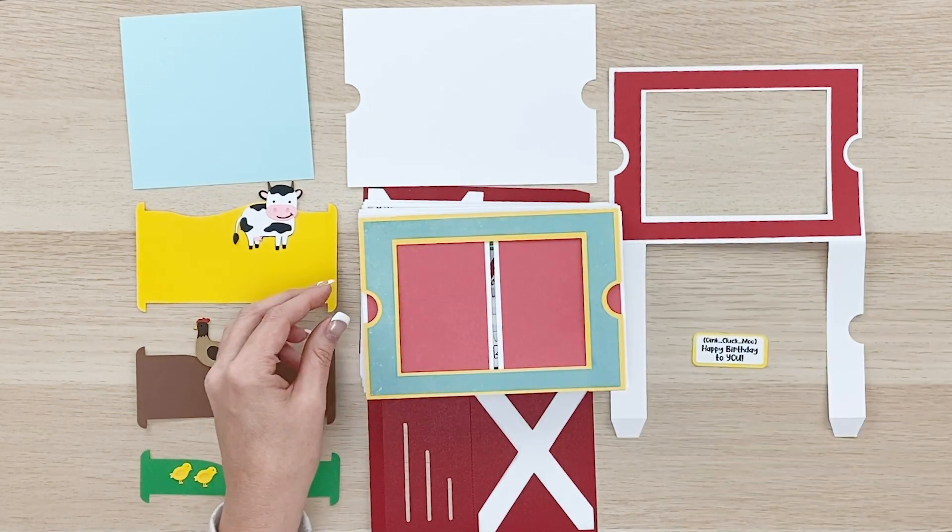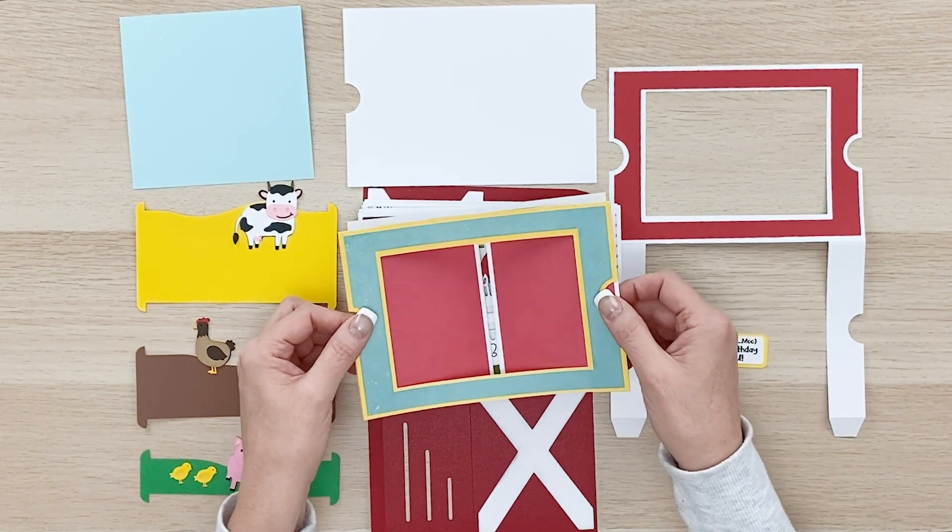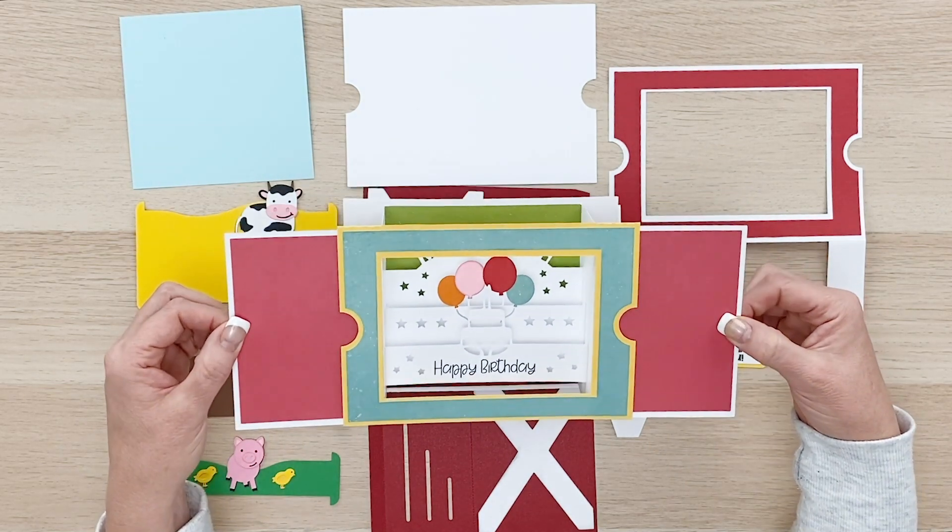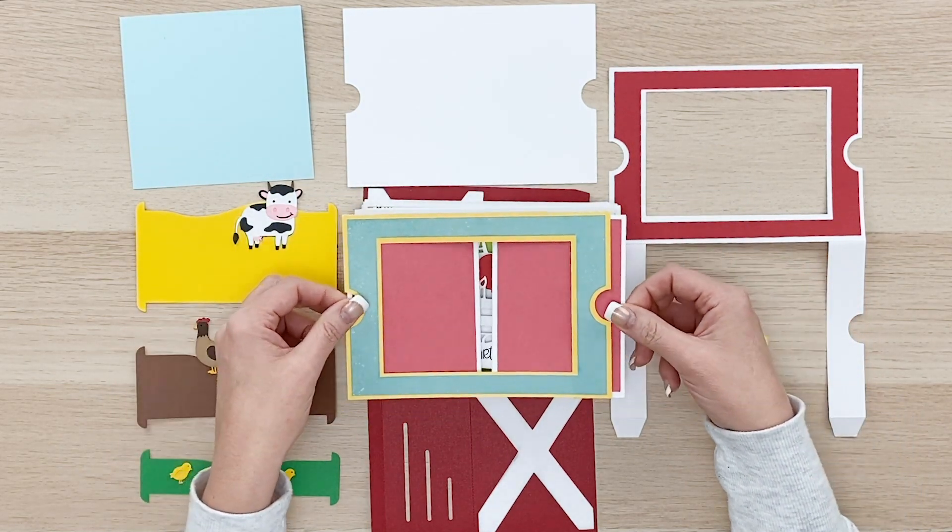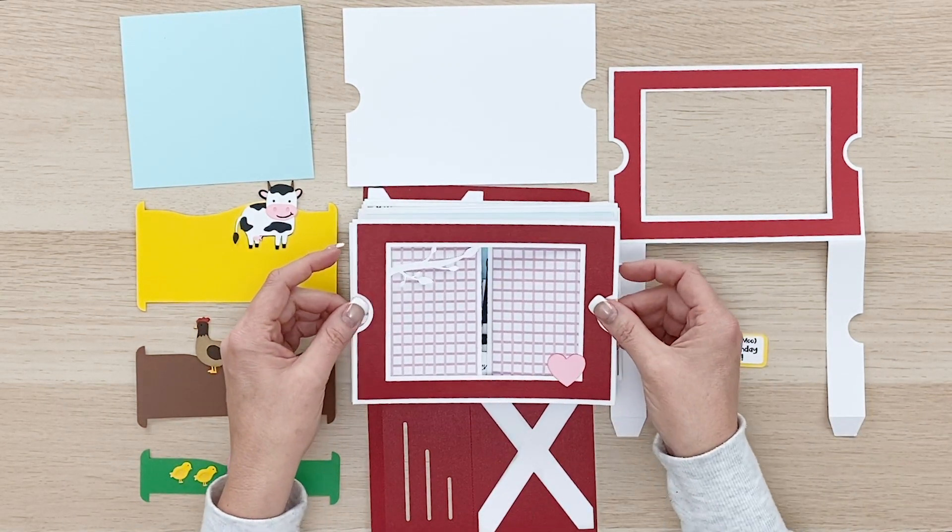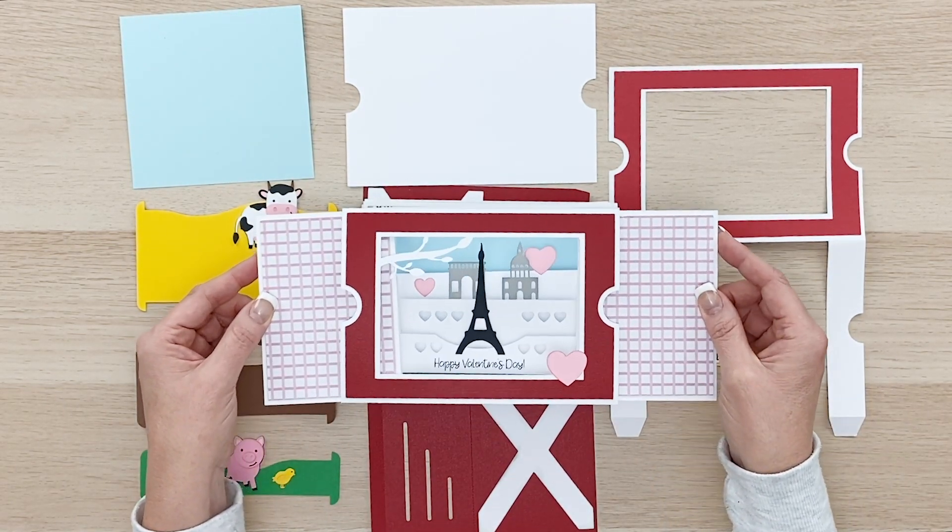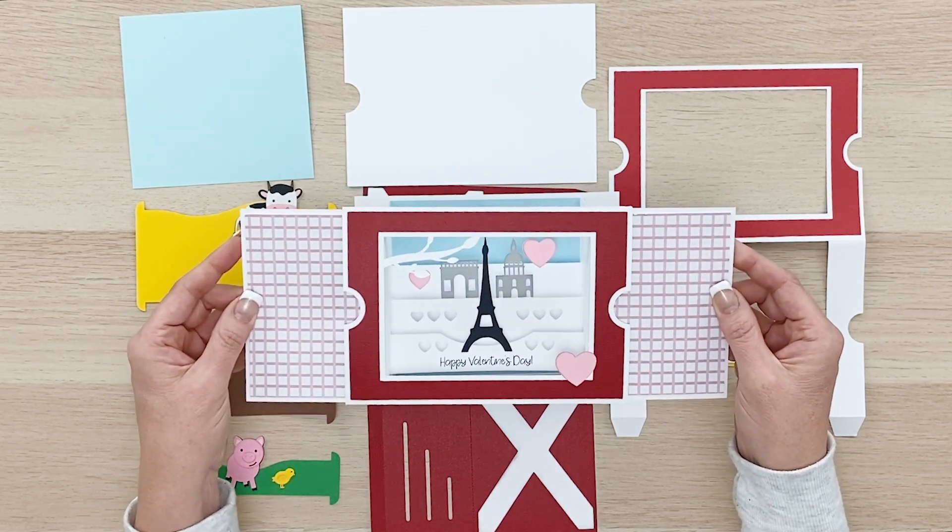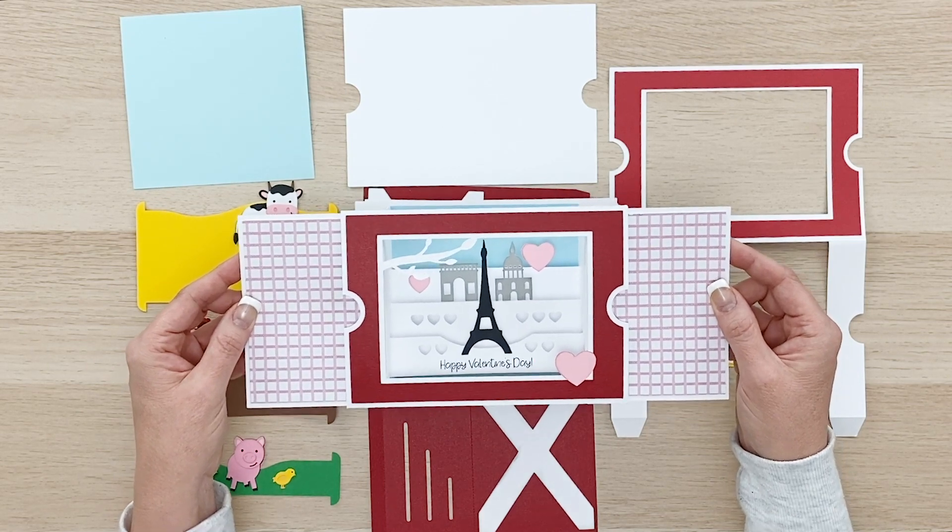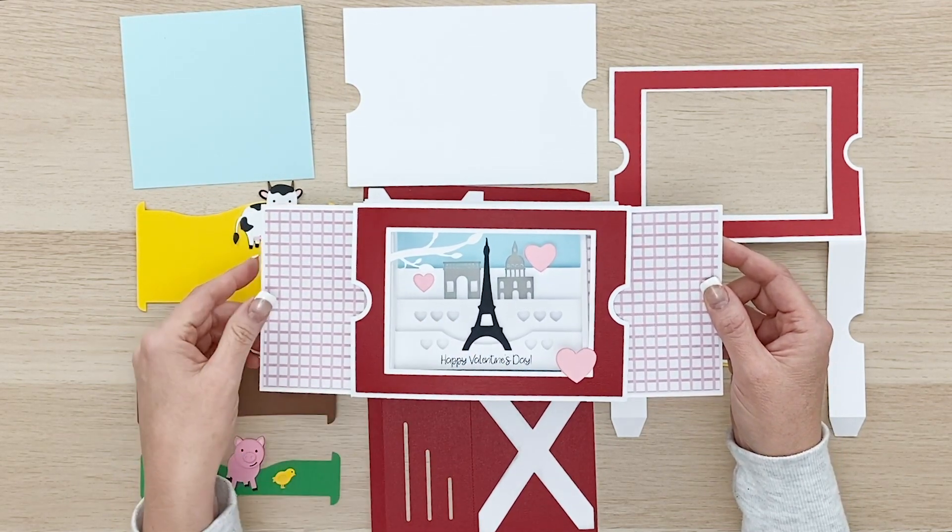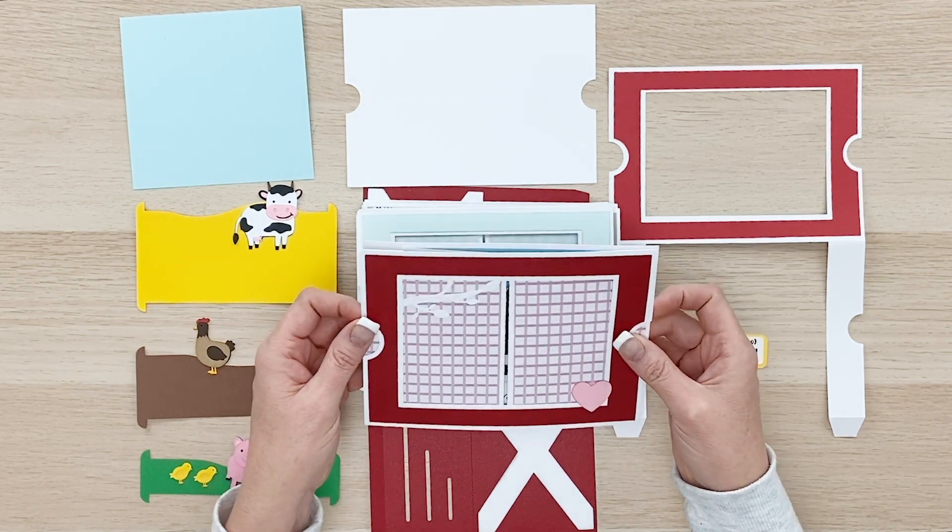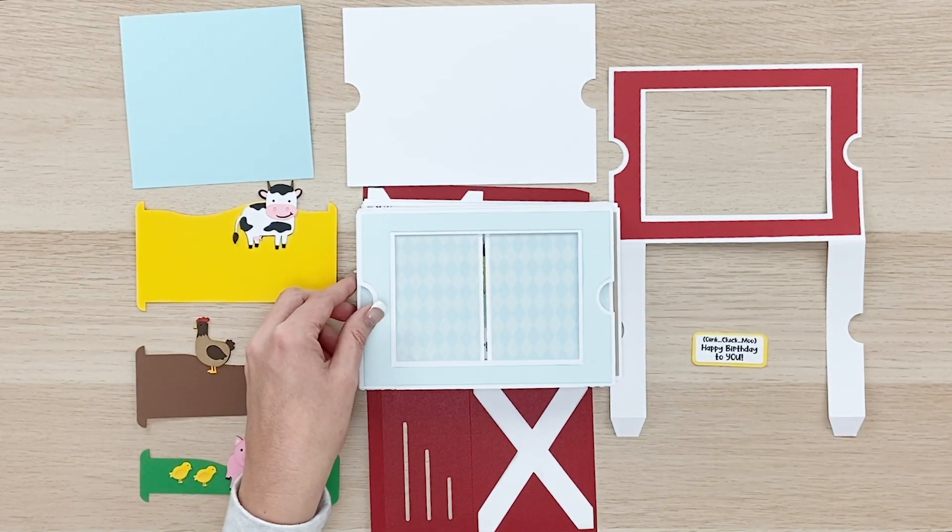So let me show you the other ones that we have already put together. This one's a birthday one, Make-A-Wish with a cute little cake. This one's a Valentine Paris style. Isn't that cute? A little Eiffel Tower in there, Happy Valentine's Day. Of course, you could change the sentiment to something else. Happy Anniversary or if you're traveling, you could change it to something else.